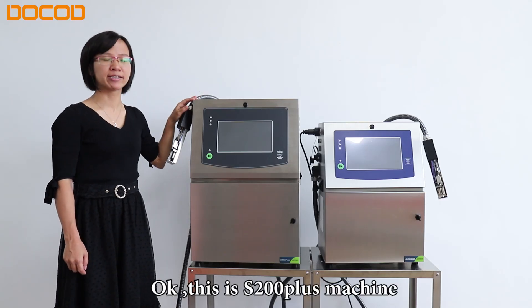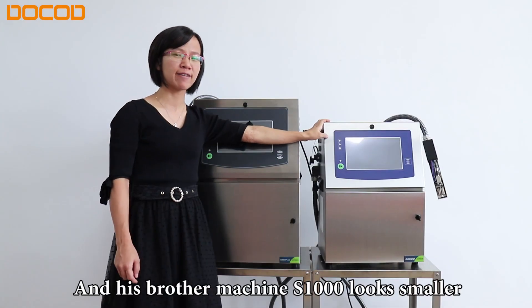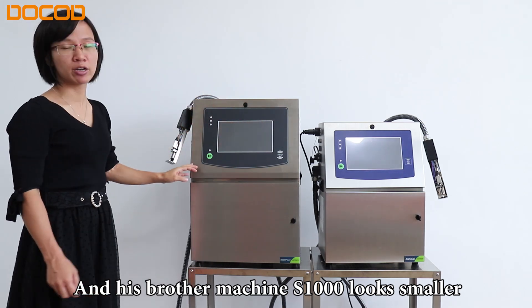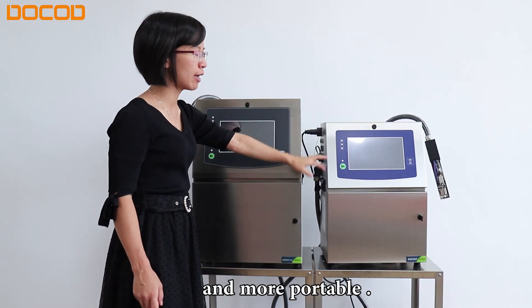Ok, this is X200 Plus machine, and its brother machine is 1000 series, which is smaller and more portable.